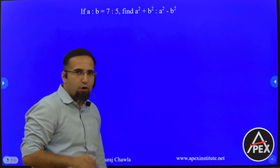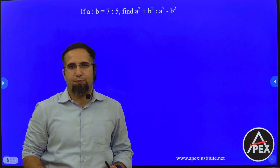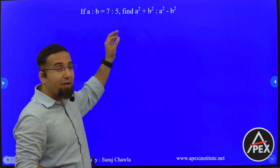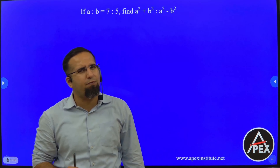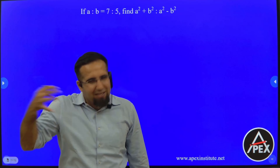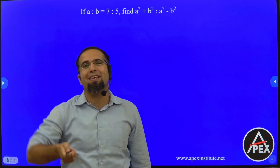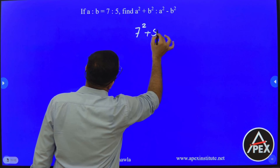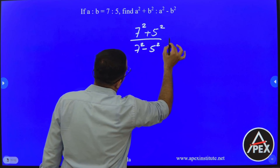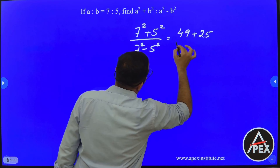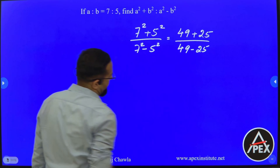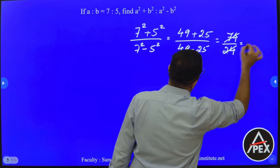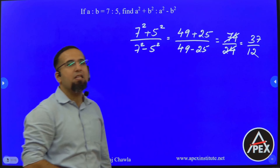Now A is to B is 7 is to 5. Find A square plus B square is to A square minus B square. Pause and observe: numerator is A square plus B square — that's in the form of K square; denominator is A square minus B square — also in the form of K square. So K square and K square cancel. Therefore directly replacing: 7 square plus 5 square divided by 7 square minus 5 square gives 49 plus 25 is to 49 minus 25, which is 74 is to 24. Cancelling by 2, the final answer is 37 is to 12.